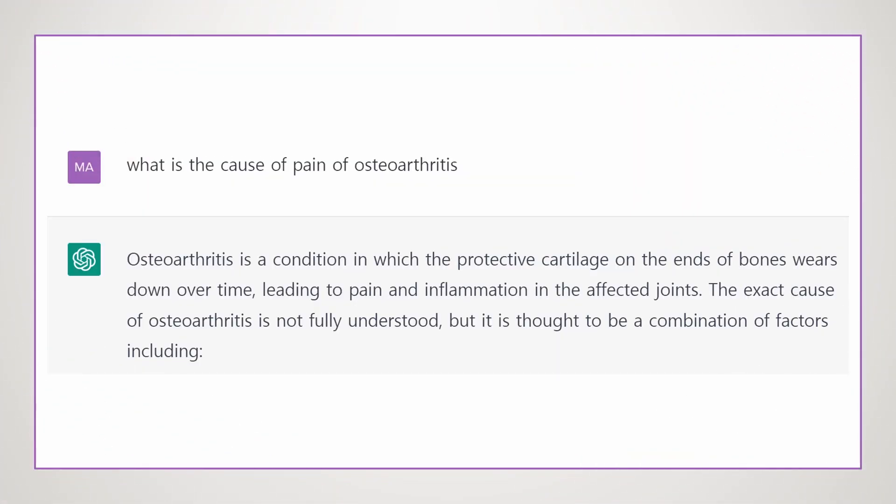First, I asked AI about the cause of the pain of osteoarthritis. It answered: osteoarthritis is a condition in which the protective cartilage on the ends of bones wears down over time, leading to pain and inflammation in the affected joints. The pain of osteoarthritis is usually due to the wear and tear of the joint, but can also be caused by inflammation of the joint and the irritation of the nearby nerves.